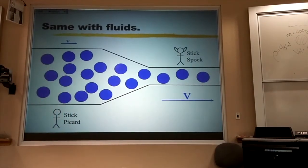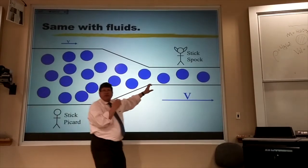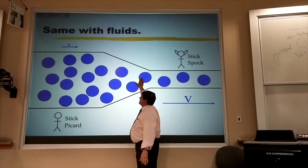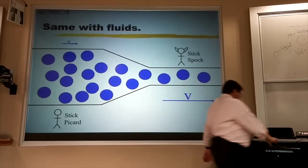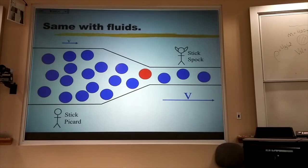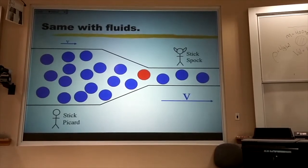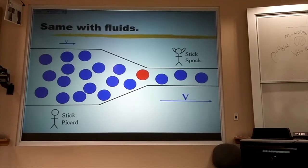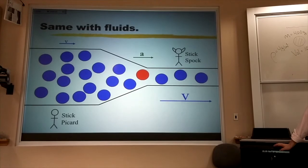Now, those of you from New Jersey know what I'm talking about. And I choose a chunky liquid because I want to concentrate on that chunk there. That chunk right there was going slow, waiting its turn. It's about to go really fast past Spock. That means that chunk is being accelerated to the right.